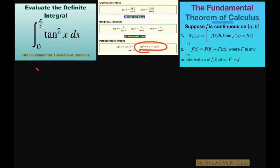So basically what I'm saying is we're going to go from zero to π/3, and I can rewrite tan²(x) as sec²(x) - 1 dx.